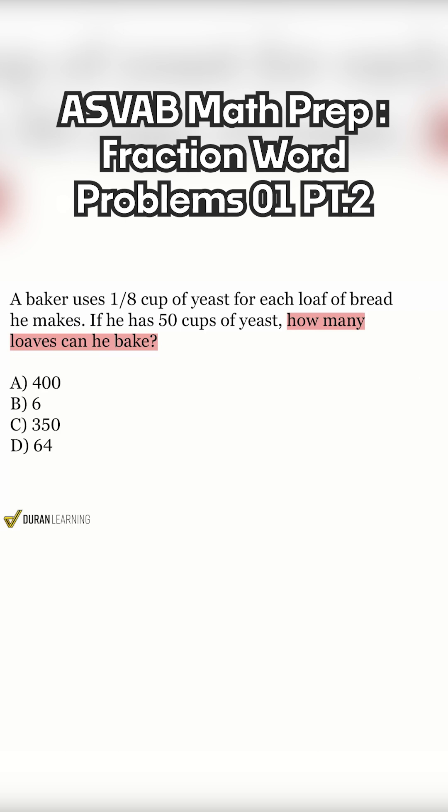We have to keep reading to understand what we truly have to do. We have 50 cups of yeast. We see here that it says a baker uses an eighth of a cup of yeast for each loaf of bread he makes. So let's really break this one down. We use one eighth of a cup for each, which is the same thing as saying per loaf of bread.